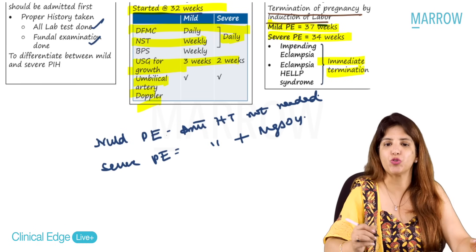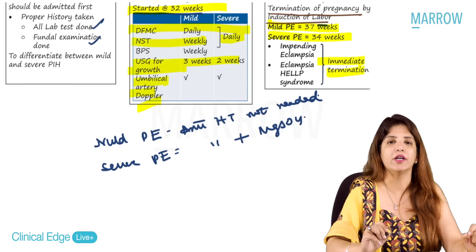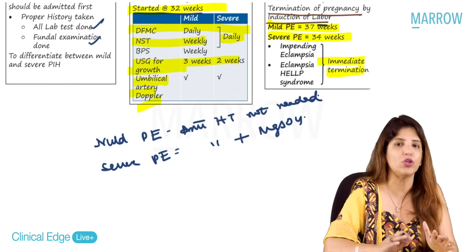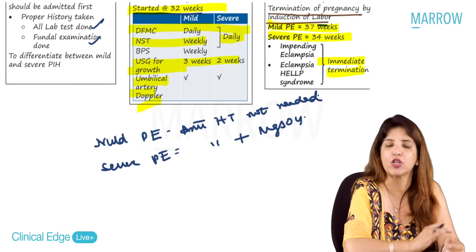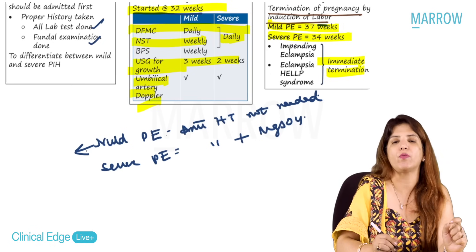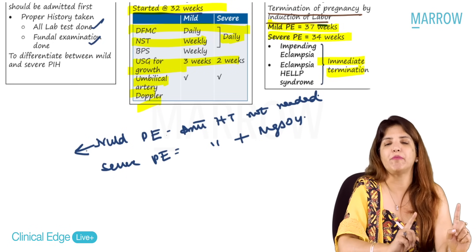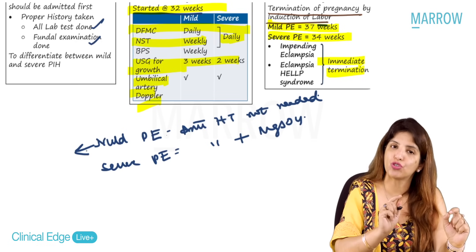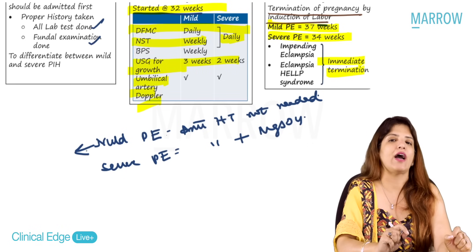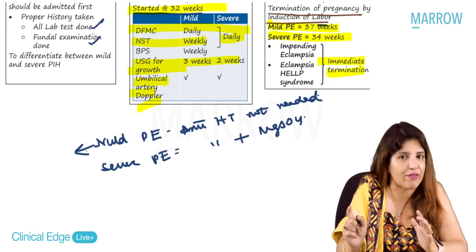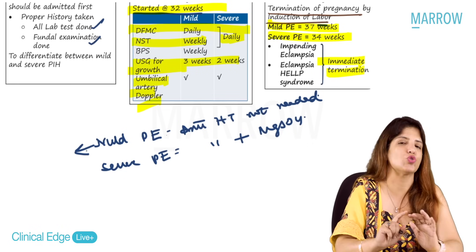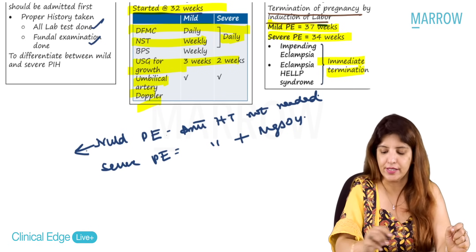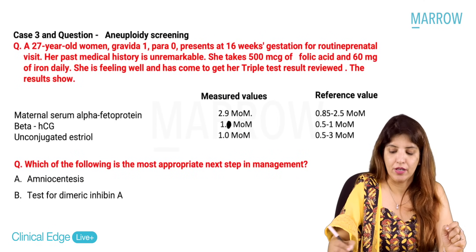Mild preeclampsia patients can be discharged after ruling out severe features, with advice to measure BP twice daily at home. Severe preeclampsia patients must remain admitted due to risk of convulsions and HELLP syndrome. They are managed as inpatients.